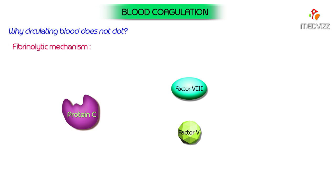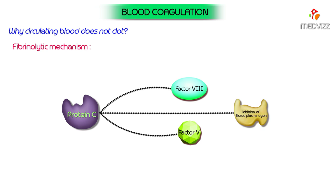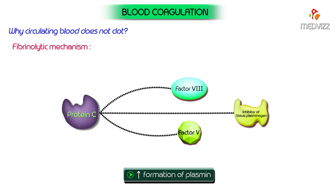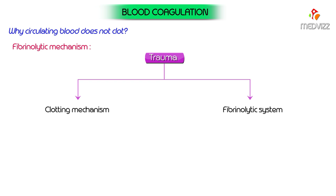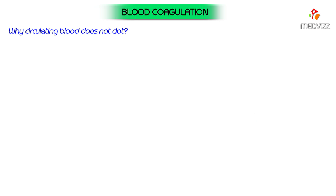Fibrinolytic mechanism: protein C is a naturally occurring anticoagulant which inactivates factors 5 and 8, and also inactivates an inhibitor of tissue plasminogen activator, increasing the formation of plasmin which acts as a fibrinolytic system. Wherever there is trauma, along with activation of the clotting mechanism, the fibrinolytic system is also activated, which prevents the spread of intravascular clotting. The liver also plays a role in preventing intravascular clotting by removing activated clotting factors.